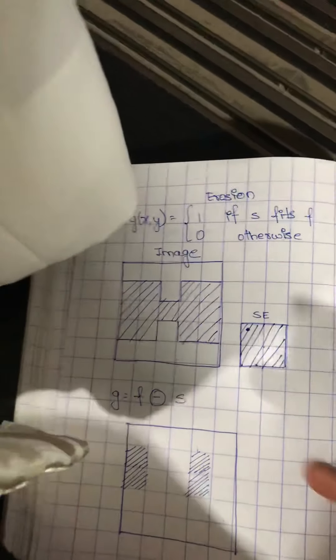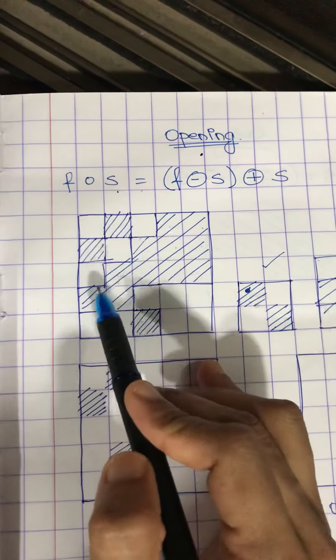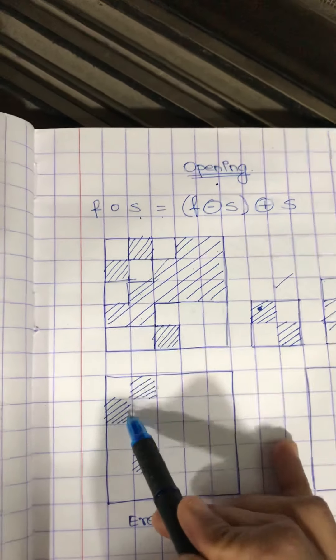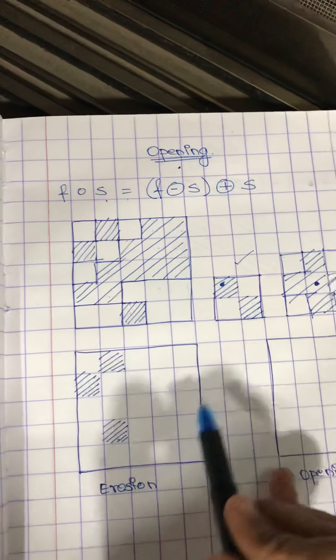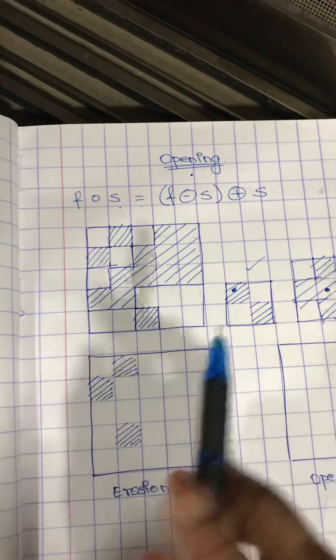Now erosion again as we saw, it has to be a complete fit. Wherever, in whichever pixels it is a complete fit, only those pixels will be shaded. Rest all of the pixels will be turned into background pixels.